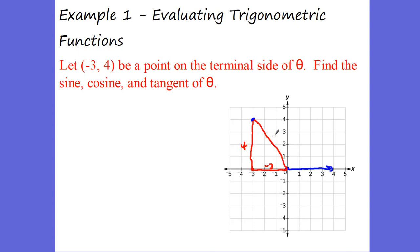we get negative 3 squared plus 4 squared. It gives me a 3-4-5 triangle. This is our terminal side. So we want to find the sine of my angle. Remember, sine is the opposite over the hypotenuse. My opposite is 4 over the hypotenuse of 5. So the sine of the angle equals positive 4 over 5.